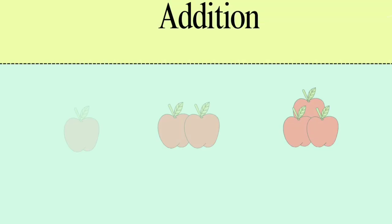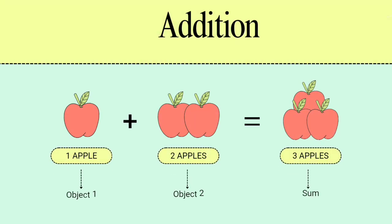Let's understand it with examples. If we add one apple into two apples, its sum will be three apples.